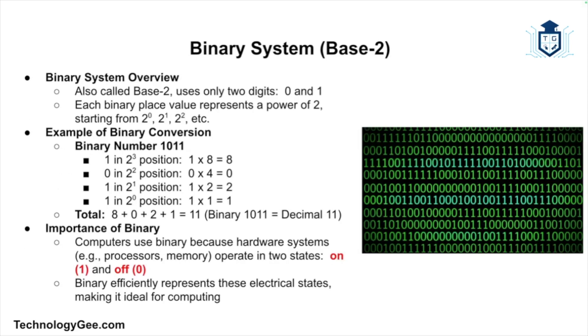This brings us to the binary system, the fundamental language of computers. It is also known as base 2 and uses only two digits, 0 and 1. In binary, each place value represents a power of two, starting with 2 to the zero, 2 to the first, 2 squared, and so on. Binary is used by computers because at the hardware level everything is represented as electrical states, typically on and off, which can be efficiently represented by ones and zeros.